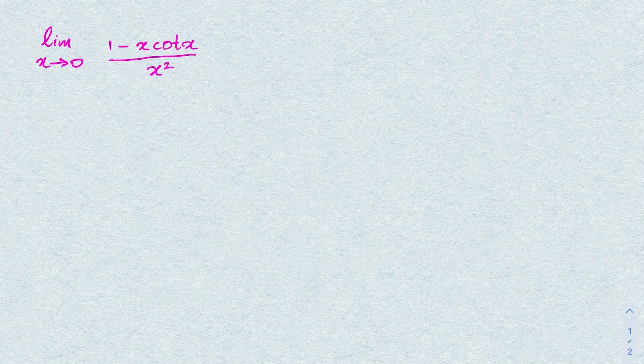At first glance you may want to convert cotangent of x to sine and cosine. Since cotangent of x equals cosine of x over sine of x, we take the common denominator and get (sine of x minus x times cotangent of x) over x squared.